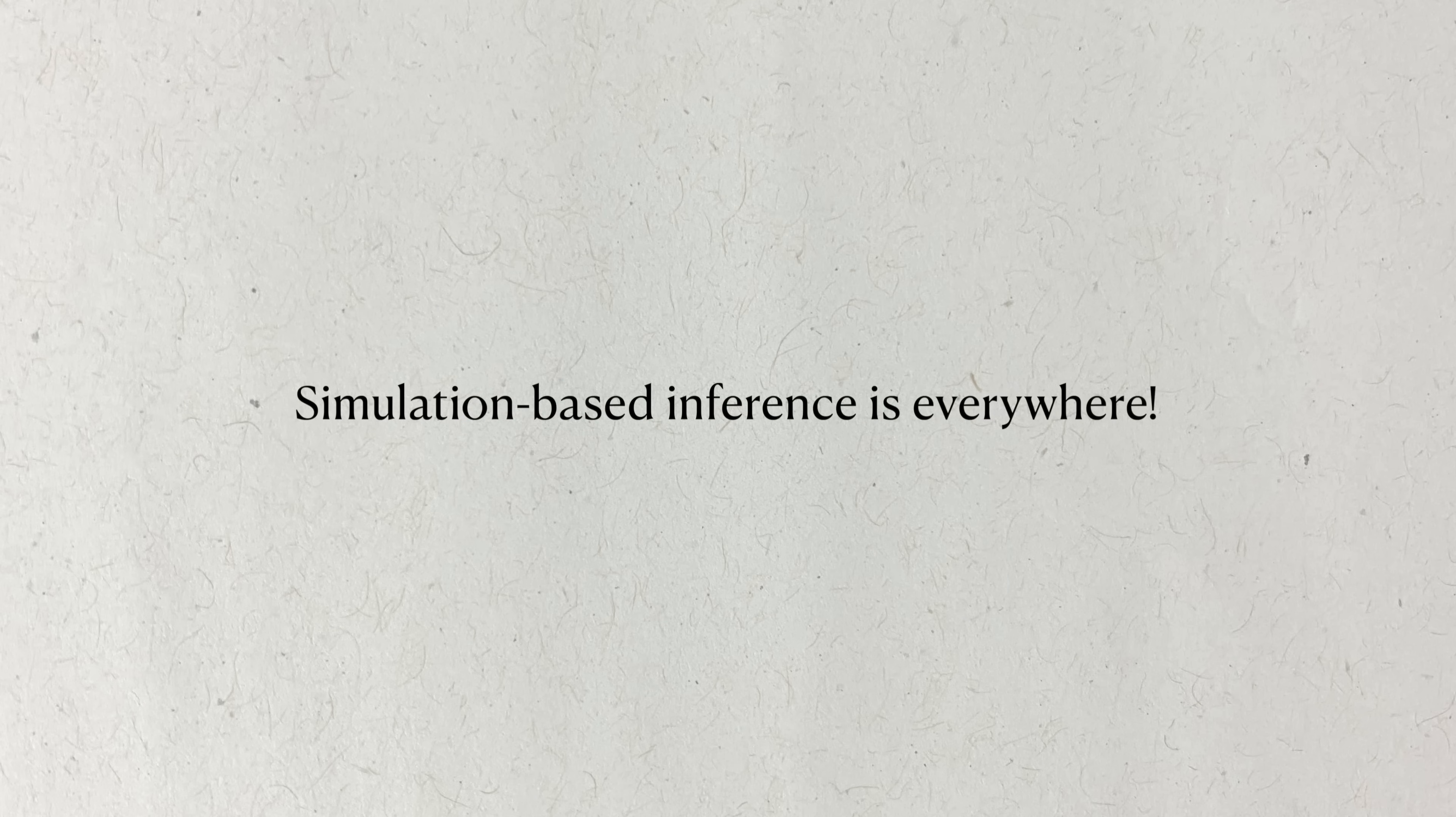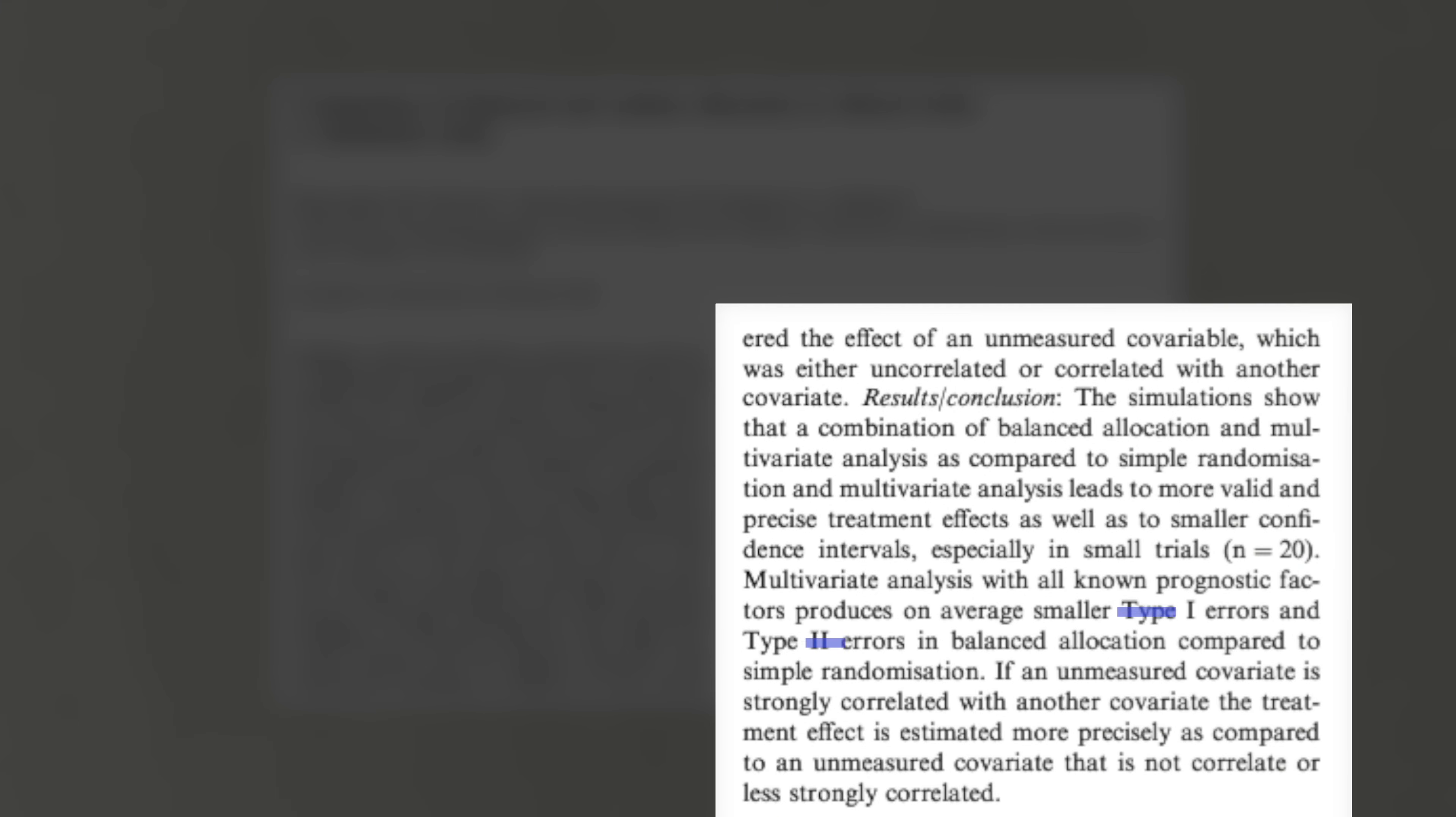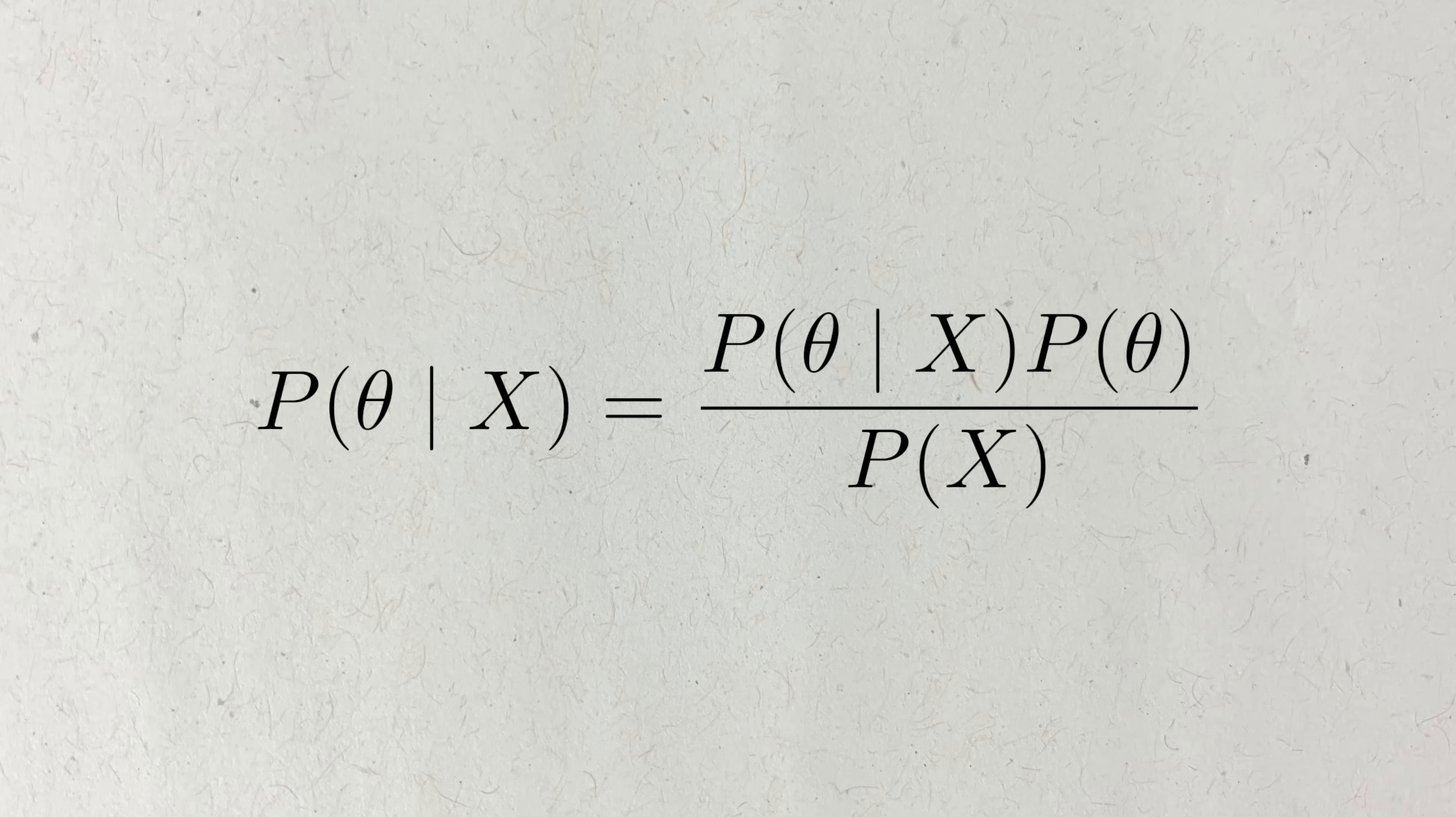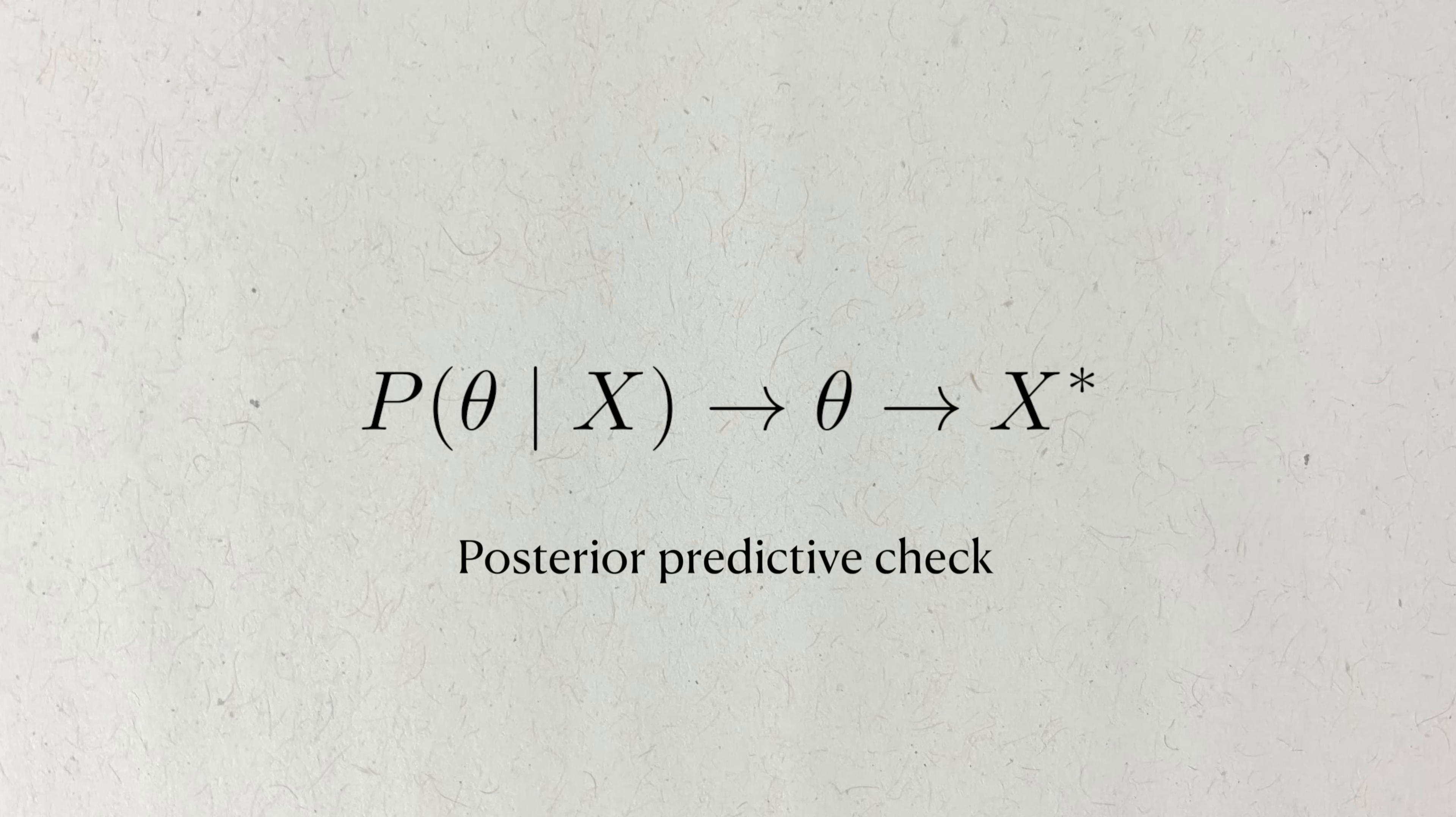The rise of computational power has made it easier to perform simulations, and simulated data allows us to assess experiments and new statistical models. For example, simulations can be used to assess power and type 1 error of experimental designs for clinical trials without actually needing to run them. This means a lot of money and effort is saved for pharmaceutical companies. Another example of simulation-based inference comes from Bayesian statistics. Bayesians encode knowledge in the form of priors, or probability distributions on parameters. Using these priors, we can actually simulate data from a prior distribution and check if the resulting data we collected actually makes sense. This is called a prior predictive check. The same can be done for the posterior distribution of a parameter, which makes it a posterior predictive check. And these are incredibly useful for validating our models.